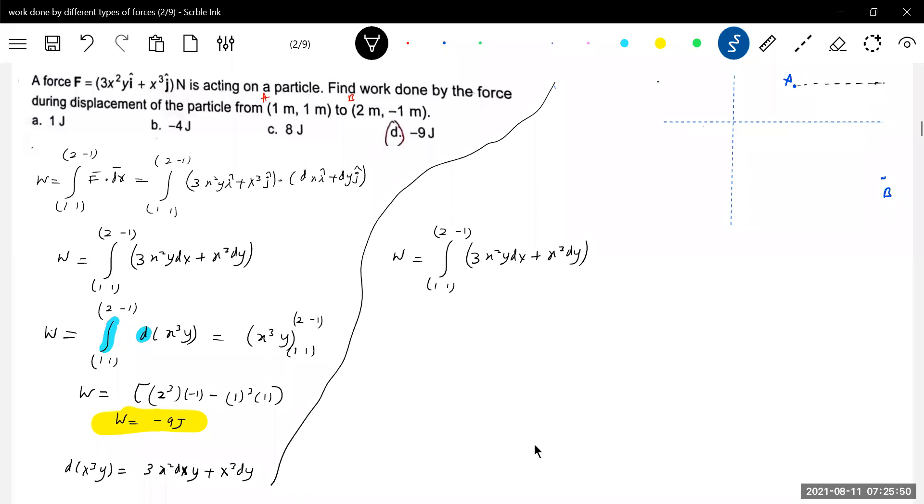So what is the method of integration? So first I will move from 1,1 to 2,1. Then from there I will reach the 2, minus 1. So this is the, what is the, I think, 1,1. This will be 2,1. Then I will reach the path which is needed, 2, minus 1. So first I am going to move the object along x axis. Then I am going to move along y axis. Then how do we, how we should integrate?